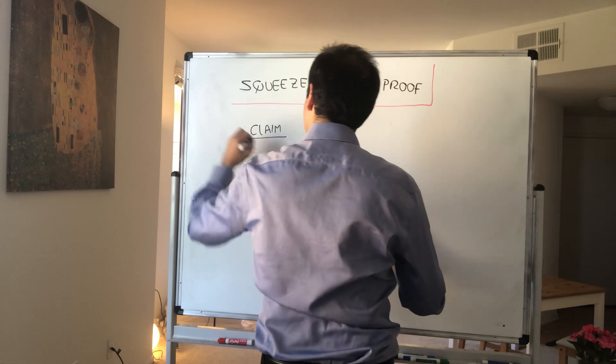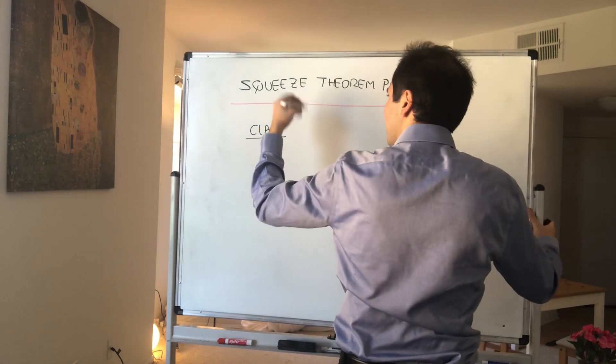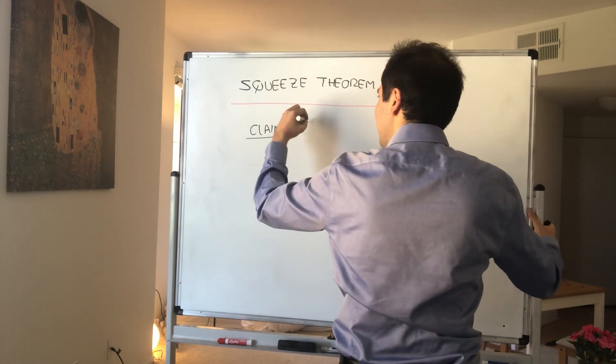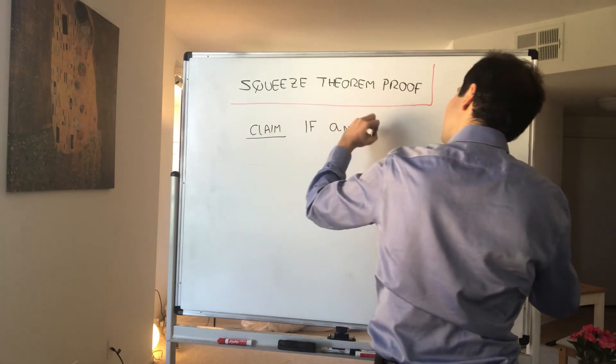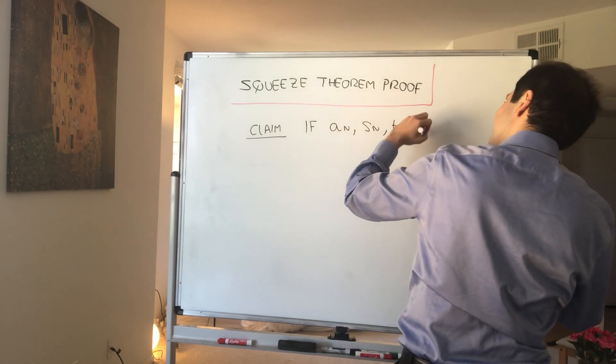So claim: if you have three sequences a_n, s_n, and b_n that are sequences